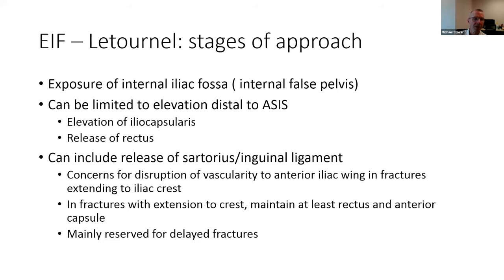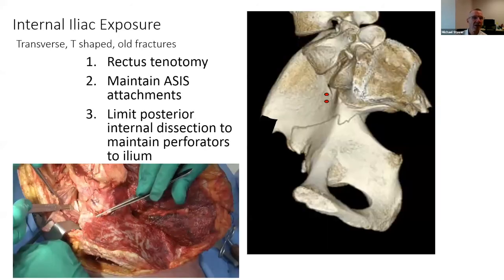This release has been used mainly for delayed fractures to help clean the area, more commonly with a transverse segment. The exposure obtained with tenotomy of the rectus from the anterior inferior iliac spine still allows use of a window into the internal iliac fossa for visualization if a fracture goes along the iliac crest and exits highly.